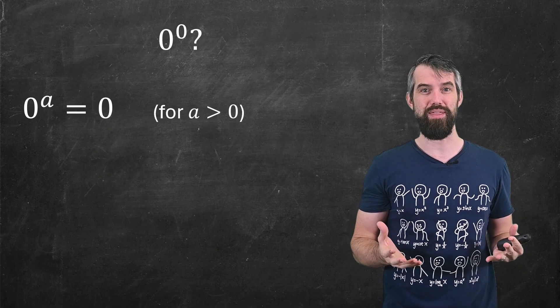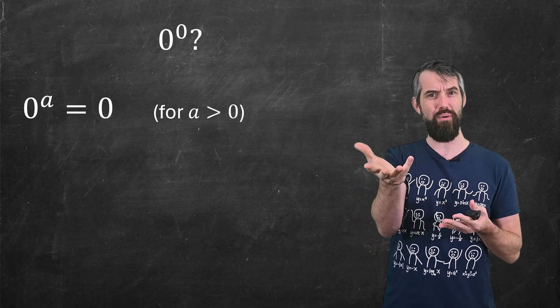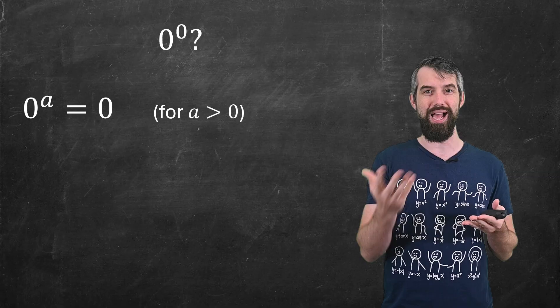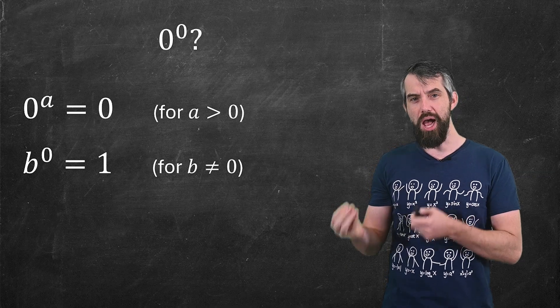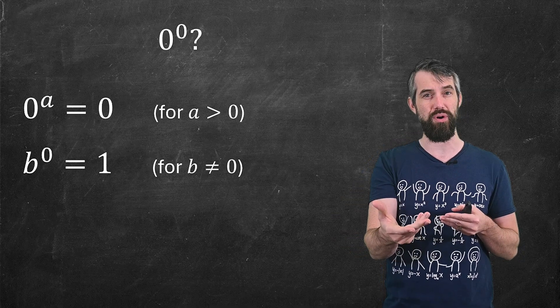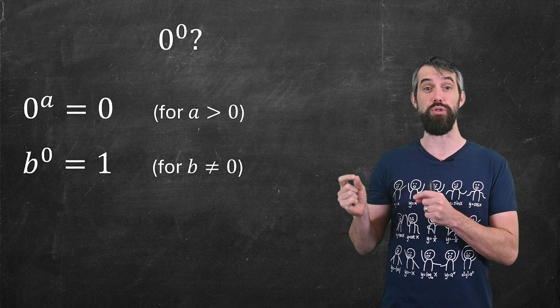So what's the controversy? If I look at zero to the power of a, this is clearly zero. Like zero squared would be zero times zero, that's clearly zero. But in contrast, if I look at b to the power of zero, this is always equal to one.